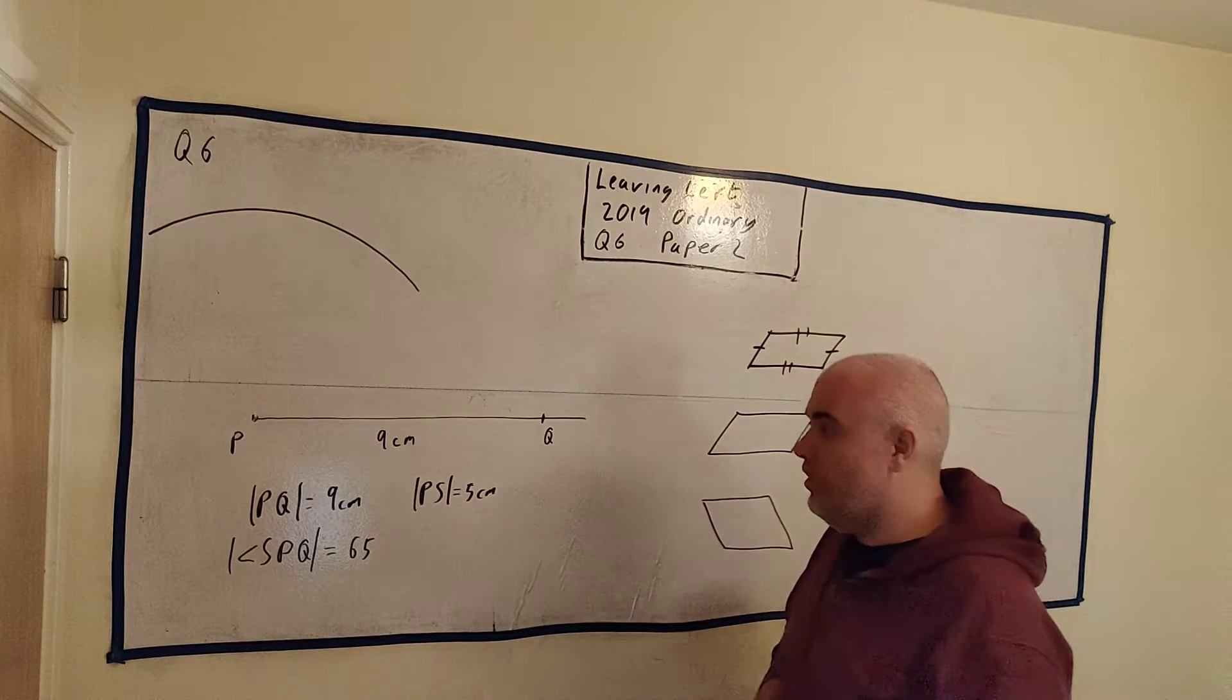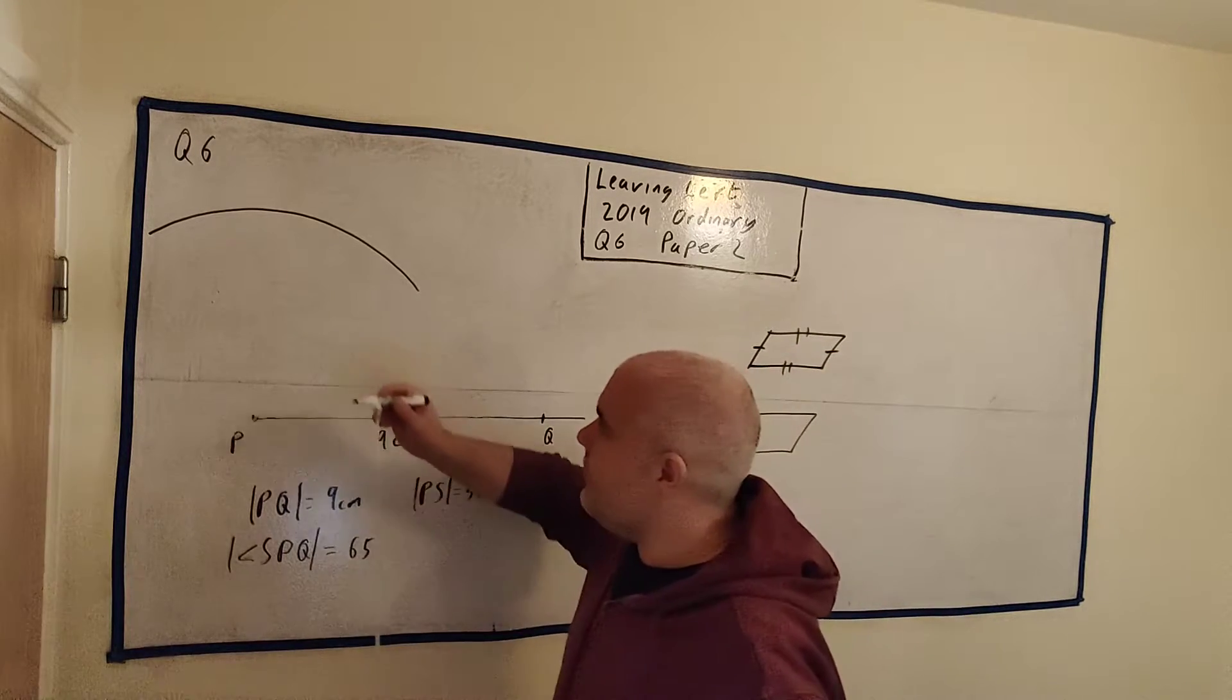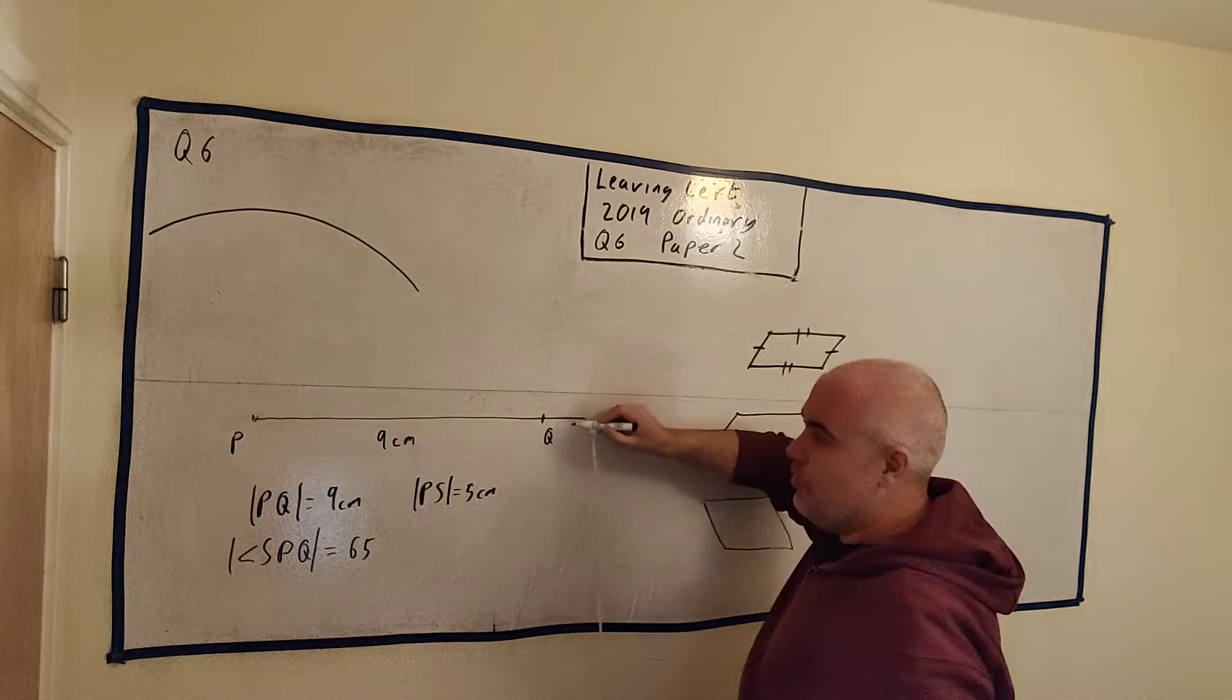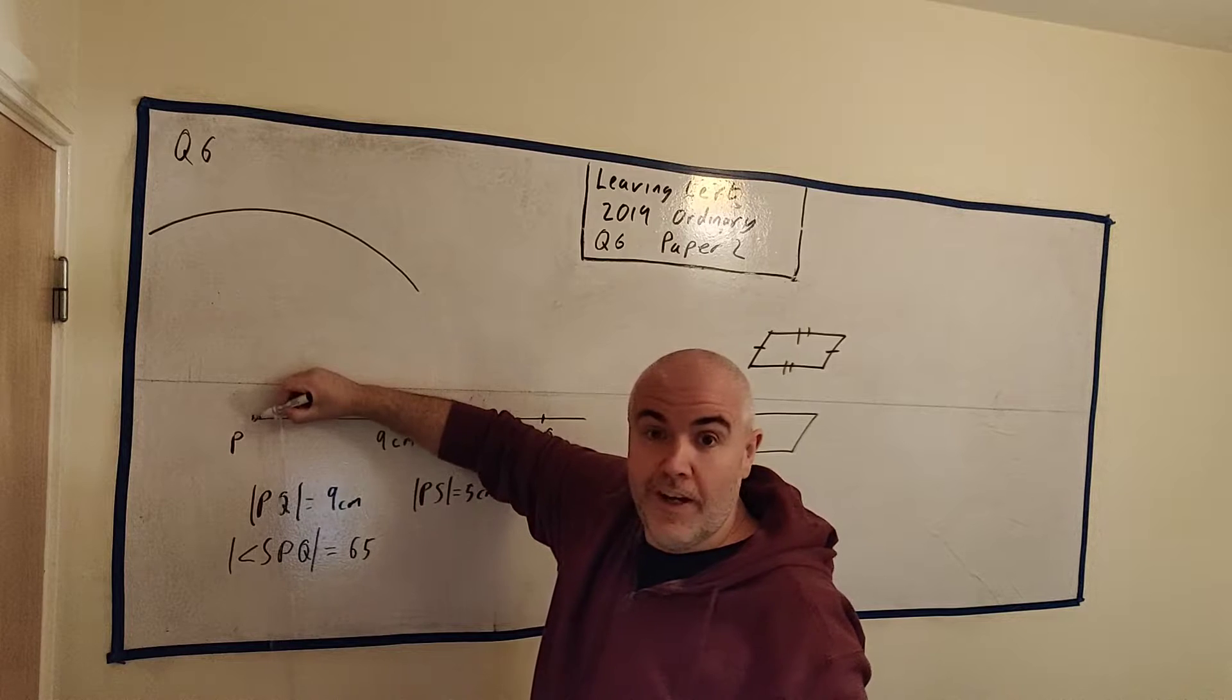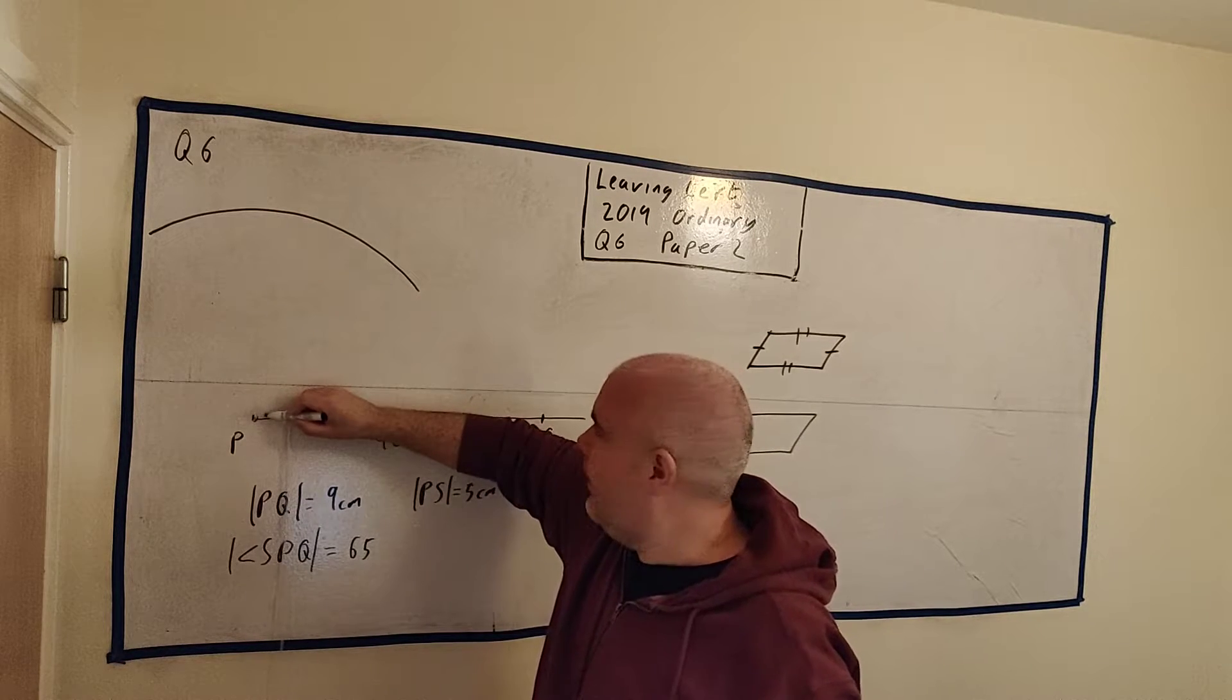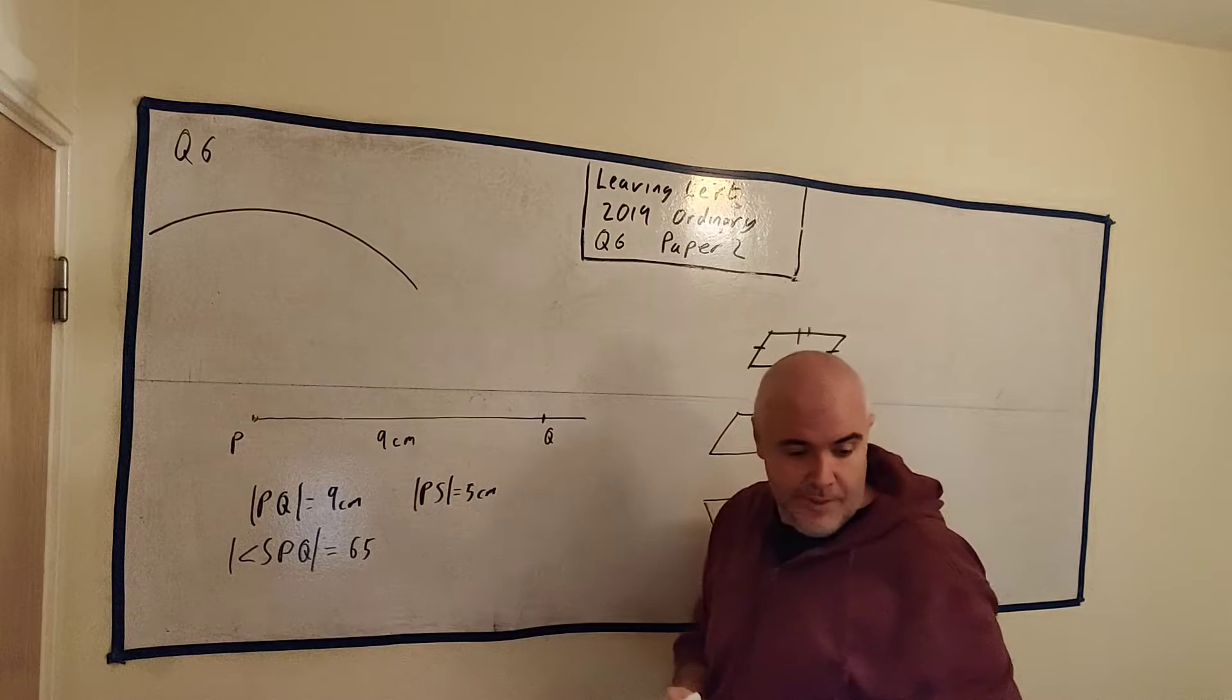Now we need more information, and luckily they gave it to us. They told us angle SPQ is 65 degrees. That means starting at S, going to P and going to Q, the angle it leaves in there is 65. It's not over here, that would be over 90 degrees. 65 must be somewhere over here.